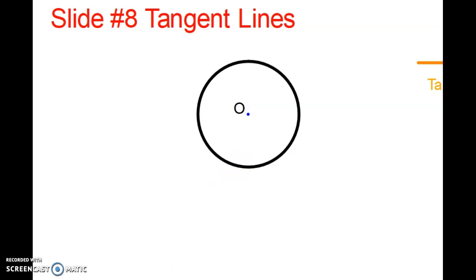So if you look here, here we have a circle O and there's a center. I'm going to drop down a tangent line and there's my tangent line. Remember it touches a circle in one spot.